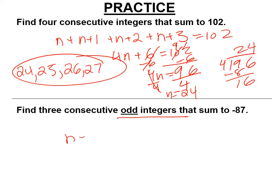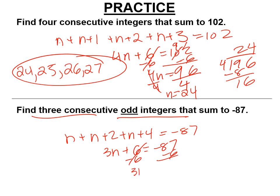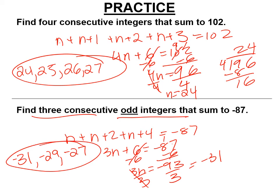We're skipping numbers, so we're doing n plus n plus 2 plus n plus 4, and there's three of them, adding up to negative 87. n plus n plus n is 3n plus 6 equals negative 87. Subtract 6 from both sides — remember this is 7 plus 6 is 13 — so 3n equals negative 93. Divide both sides by 3, and n equals negative 31. The first number is negative 31, and the next two are negative 29 and negative 27. Those are three consecutive odd integers — you're skipping numbers. Some people will say negative 31, negative 30, negative 29, but those won't add up and they're not all odd.